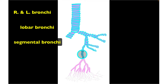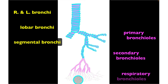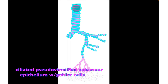The primary, lobar, and segmental bronchi are all covered with cartilaginous rings of hyaline cartilage. Coming off the segmental bronchi, we have bronchioles, which no longer have hyaline cartilage. The bronchioles give rise to secondary and then tertiary bronchi, otherwise known as the respiratory bronchi, which lead directly into the alveoli. The lining of the trachea is covered with ciliated pseudostratified columnar epithelial tissue with goblet cells.